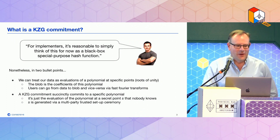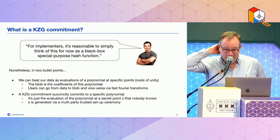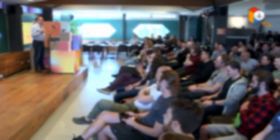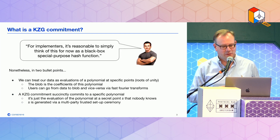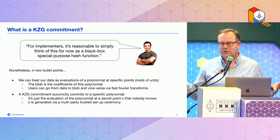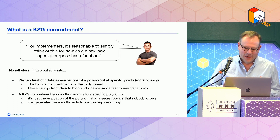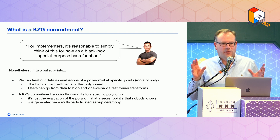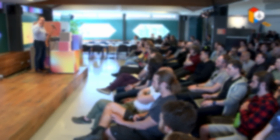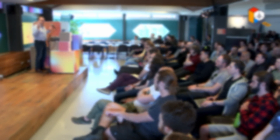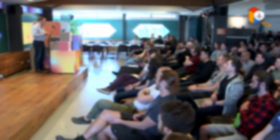What is a KZG commitment then? Well, as Vitalik's head on Danny Ryan's body says, you don't need to worry about it — just treat it like some kind of specialized hash function that's got some nice properties. Nonetheless, what's happening under the hood is that we have this data set and we convert it to a polynomial. It's a polynomial commitment, and we do that using fast Fourier transforms. In-protocol we don't need to worry about that — that's the L2 people's problem. We commit to this polynomial by evaluating it at a random point that nobody knows — it's a secret. That represents our entire polynomial. Of course it represents any number of polynomials, but the chance of anyone stumbling across the same one as ours is infinitesimal. We generate this random point that nobody knows via a trusted setup ceremony.